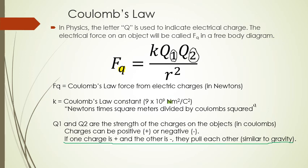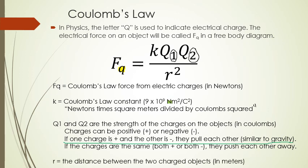Long story short: if one charge is positive and one is negative, they pull each other towards each other — they attract. If they are the same — both positive or both negative — they push each other away. And r, just like with gravity, is the distance between the two charged objects in meters, to cancel out the meters in the constant. That's why we want meters.